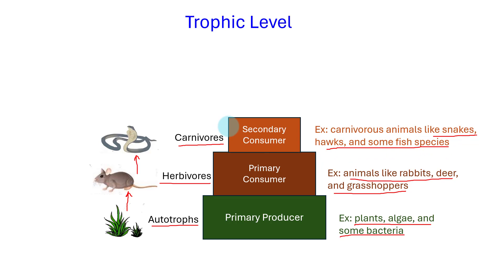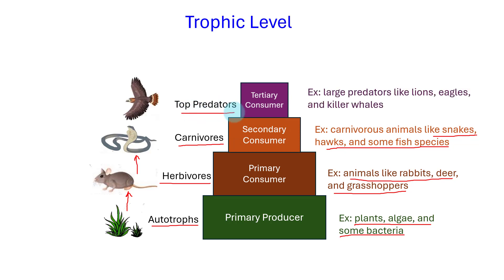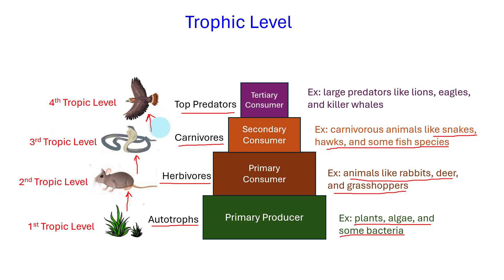At the highest trophic level are the tertiary consumers, which are top predators that feed on other carnivores, and sometimes even other tertiary consumers. They have few or no predators within the ecosystem and play a critical role in controlling the populations of lower trophic levels. Examples of tertiary consumers include large predators like lions, eagles, and killer whales.